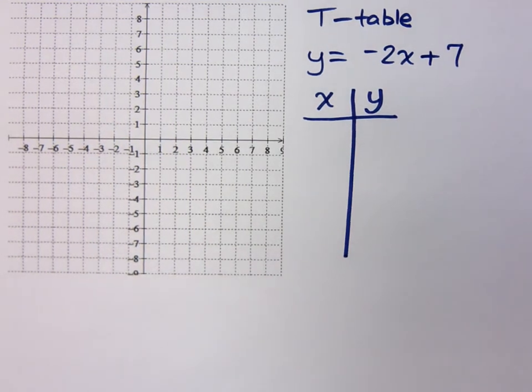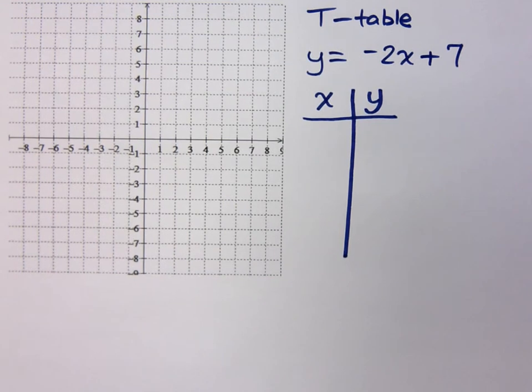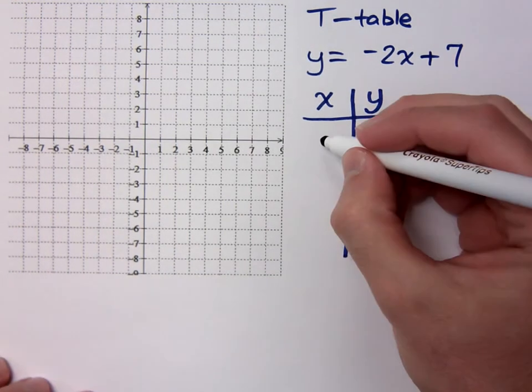I can just make a table of values like this. Now normally, you guys would just pick easy values of x to plug in here. You'd probably start with something like 0, 1, and 2. I mean, that works well enough for me.